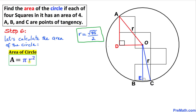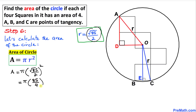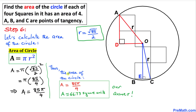For the final step, let's calculate the area of the circle using the formula A equals pi r squared. In our case, r equals square root of 85 divided by 2. Substituting: A equals pi times (square root of 85 divided by 2) squared, which gives pi times 85 divided by 4. So the area equals 85π/4.